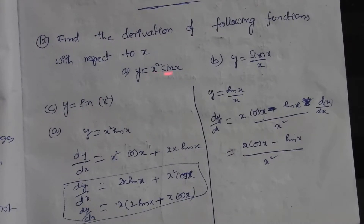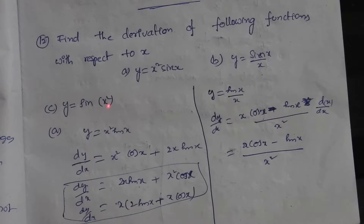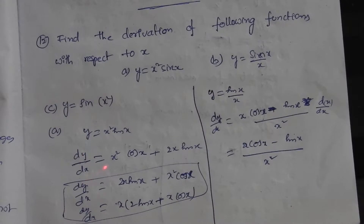Find the derivation of the following functions with respect to x: y is equal to x squared sin x, y is equal to sin x by x, and y is equal to sin of x square.